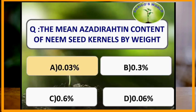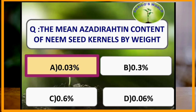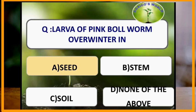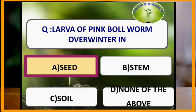The mean azadirachtin content of neem seed kernel by weight is 0.03%. Larvae of pink bollworm overwinter in the seeds.